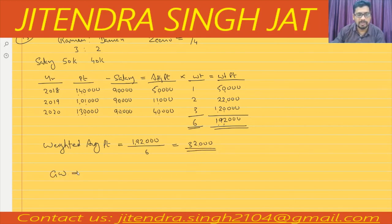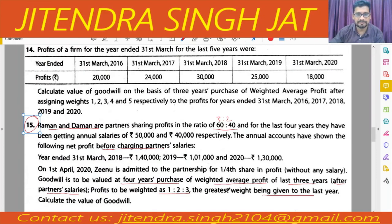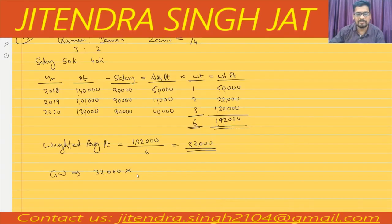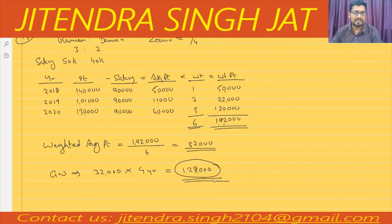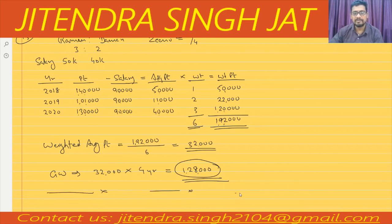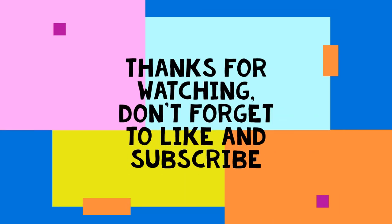Now we calculate goodwill: Weighted Average Profit × Purchase Years. Four years purchase is given. So 32,000 × 4 = 1,28,000. I hope this method of goodwill by weighted average profit is clear to everyone.